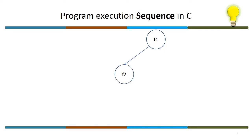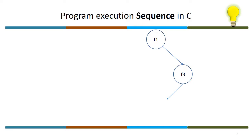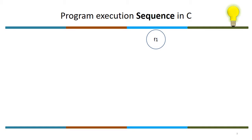We will see one more example showing a different execution sequence. f1 invokes f2, f2 completes its execution and goes back to f1. f1 then invokes f3, f3 once again invokes f2, f2 completes its execution, control goes back to f3, and finally back to f1, and the program completes.